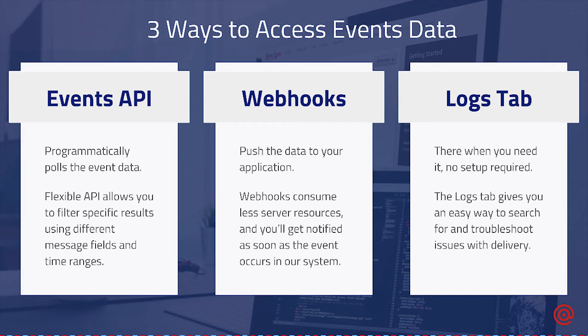For example, we have something called a bounce webhook, and we'll notify your application whenever a bounce occurs in our system. This is really ideal if you're sending out a lot of emails and you start noticing that you're getting a lot of bounces — it allows you to look at the error message and figure out why it's happening. Is there a specific error? Did I not include something? Is there a problem with Mailgun? In that case, our support team can actually jump in and help.